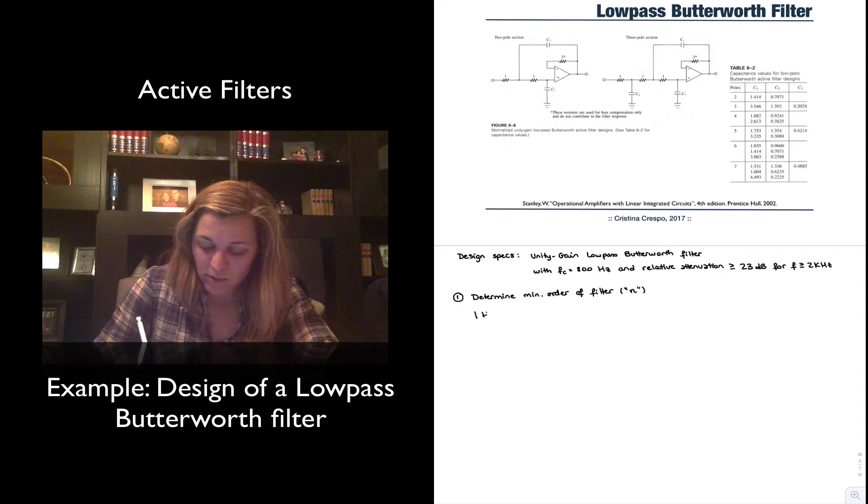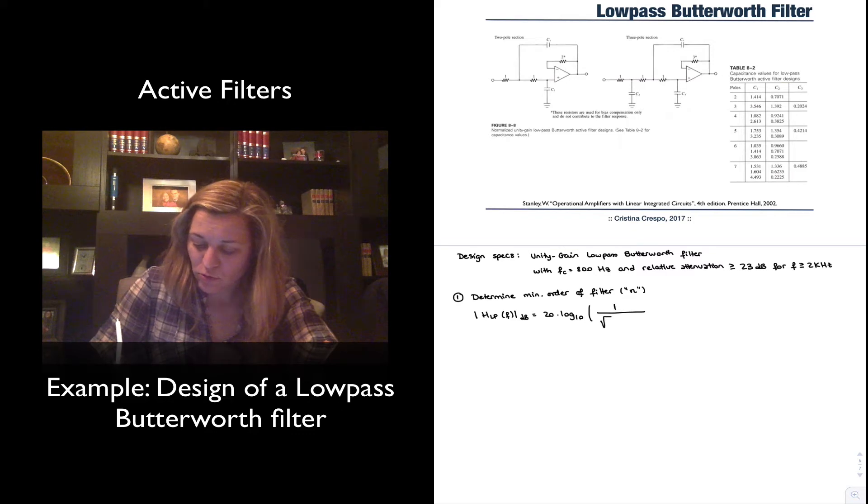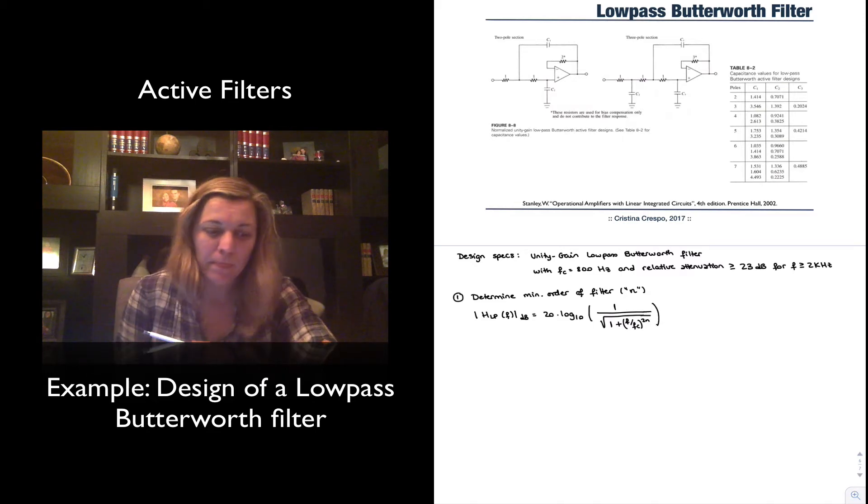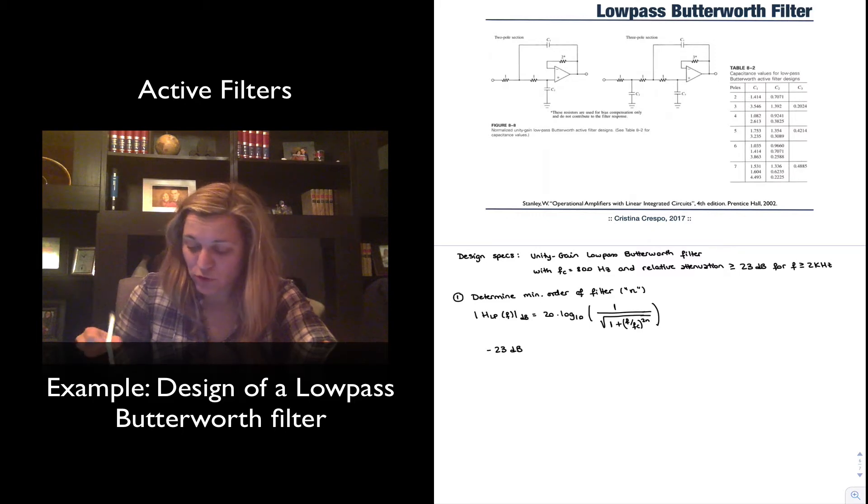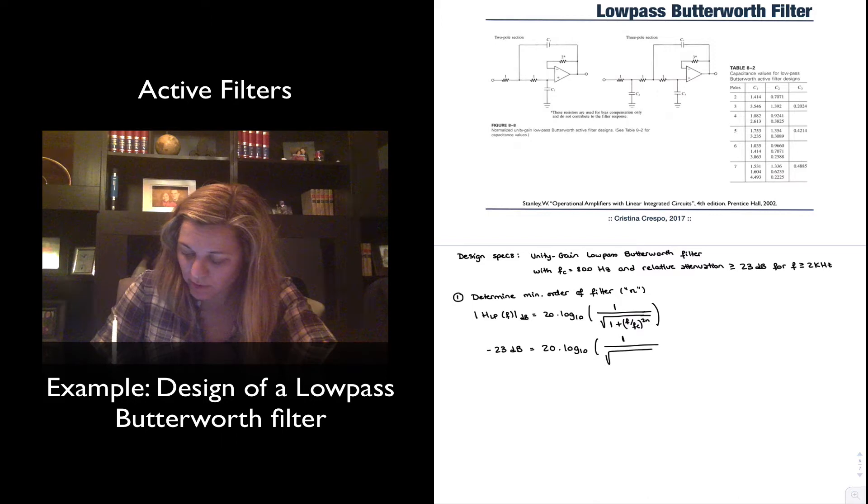We can do that by using the equation for the low-pass Butterworth filter magnitude response. In dB we have seen that it was 20 times the log base 10 of 1 divided by the square root of 1 plus f over fc to the power of 2n. We can enter our values here. So we have minus 23 dB of attenuation at a value of frequency of 2 kHz. So if we enter that for the frequency that will be 20 times the log base 10 of 1 divided by 1 plus 2000 divided by 800 to the power of 2n.